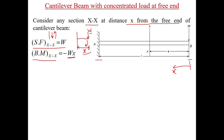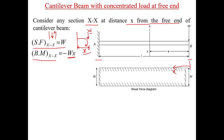Now we draw the diagrams. Since shear force is constant between A and B, the shear force diagram is a rectangle — a straight horizontal line at value W, drawn on the positive side of the reference line. This is the shear force diagram for a cantilever beam subjected to a concentrated load at the free end.